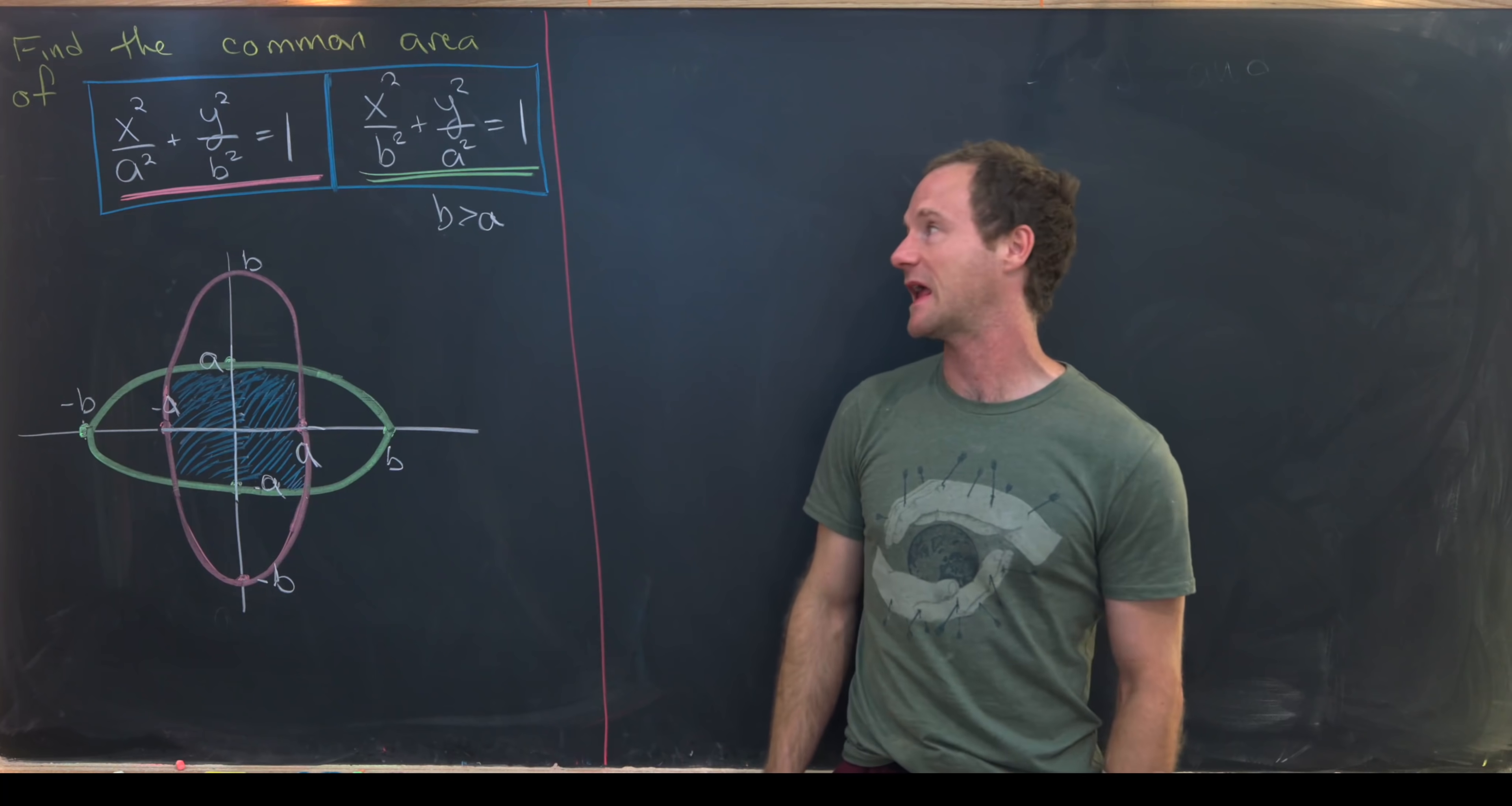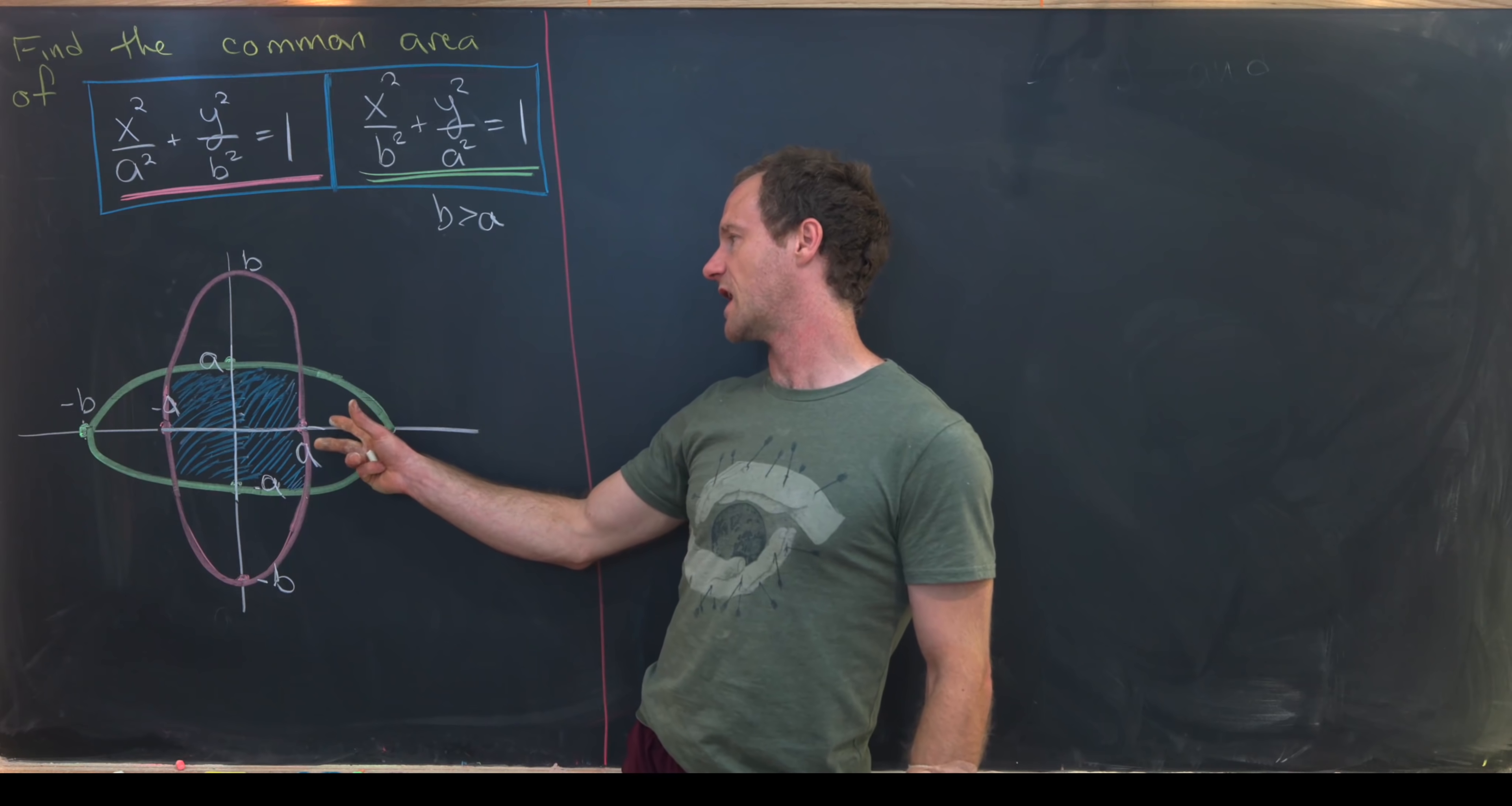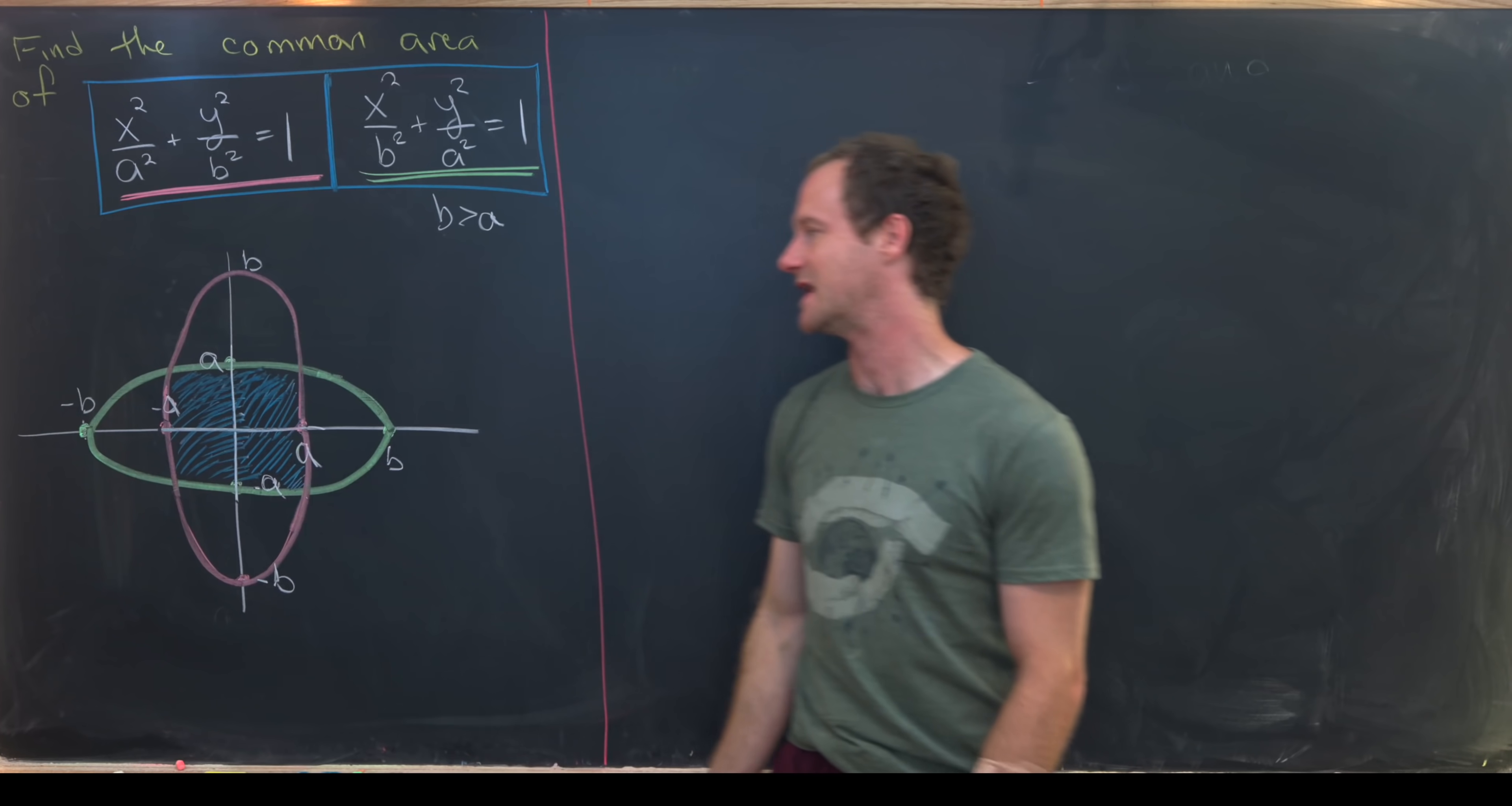Then we have a companion ellipse which is x squared over b squared plus y squared over a squared equals 1, underlined in green and drawn in green right here. In fact, this really just looks like our pink ellipse being rotated 90 degrees. And our goal is to find the common area of these two ellipses which I've shaded in purple.